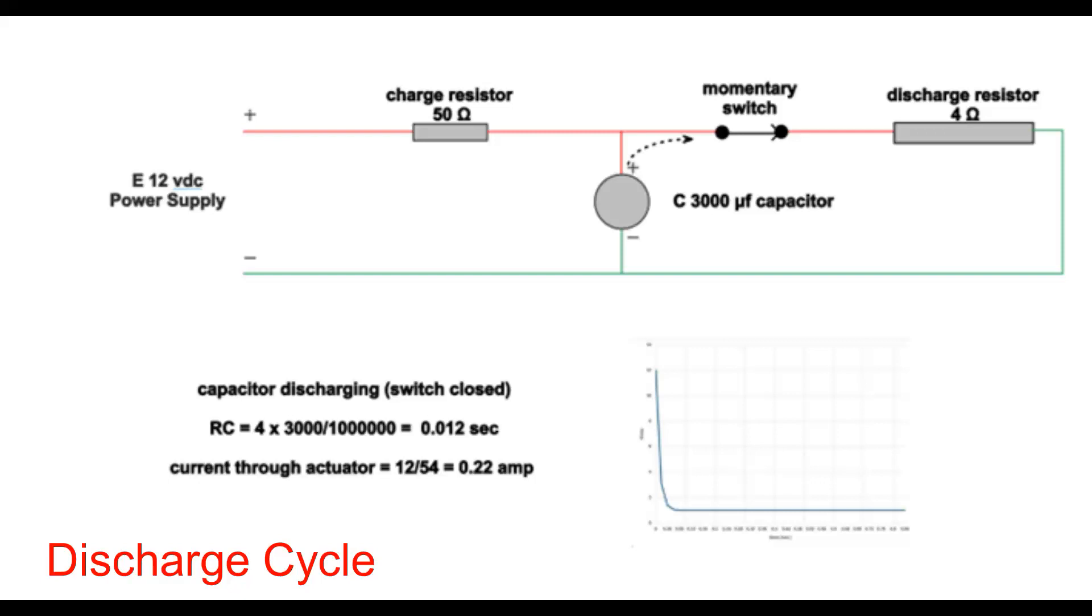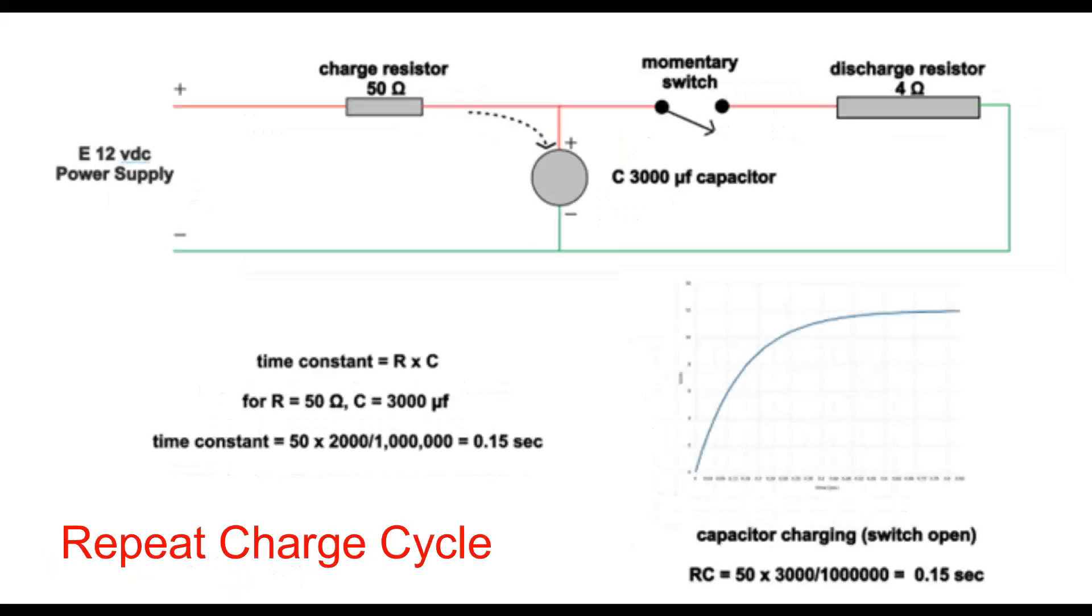The final voltage never quite goes to 0, because there's some charge coming in from the 12 volt power supply through the 50 ohm resistor, but it reaches the value shown on the slide. When you release the momentary switch, the charge on the capacitor again charges up to the maximum value.